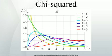Gamma, exponential, and related distributions. The chi-squared distribution χ²(k) is a special case of the gamma distribution, in that X ~ Γ(k/2, 2), using the rate parameterization of the gamma distribution, where k is an integer. Because the exponential distribution is also a special case of the gamma distribution, if X ~ χ²(k), then X ~ Exp(1/2) is an exponential distribution. The Erlang distribution is also a special case of the gamma distribution, and thus if X ~ χ²(k) with even k, then X is Erlang distributed with shape parameter k/2 and scale parameter 2.